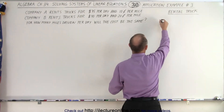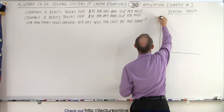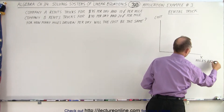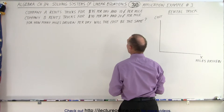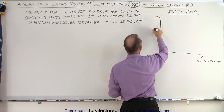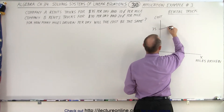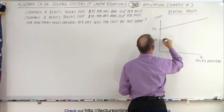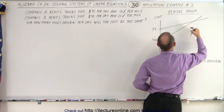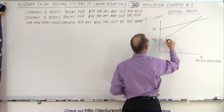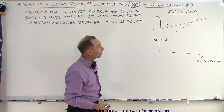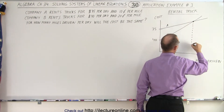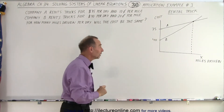Let's graph that and see what it looks like. Here we have cost on one axis and miles driven x on the other. Company A starts at 75 dollars per day and rises slowly at 10 cents per mile. Company B starts at 40 dollars per day but rises more steeply, so eventually the cost of Company B becomes greater than the cost of Company A. We want to find the equilibrium point — the miles driven at which it doesn't matter which company you use.